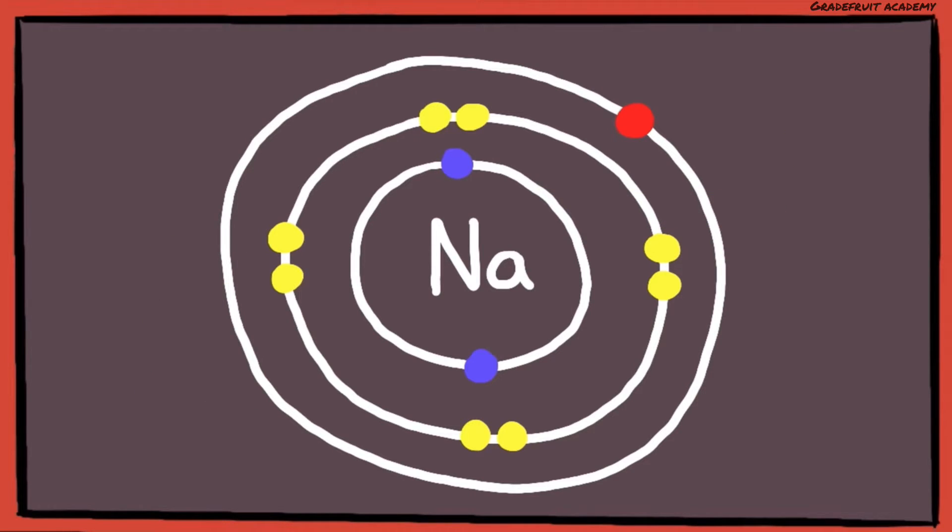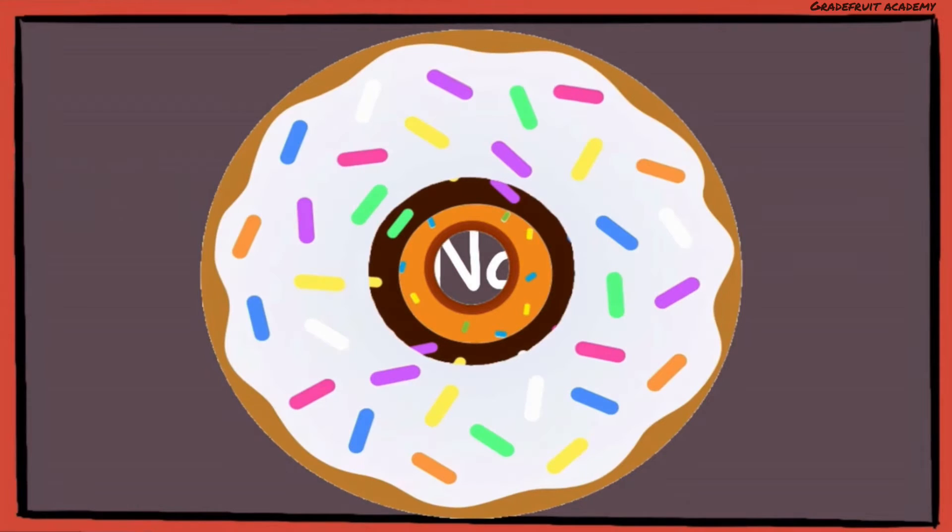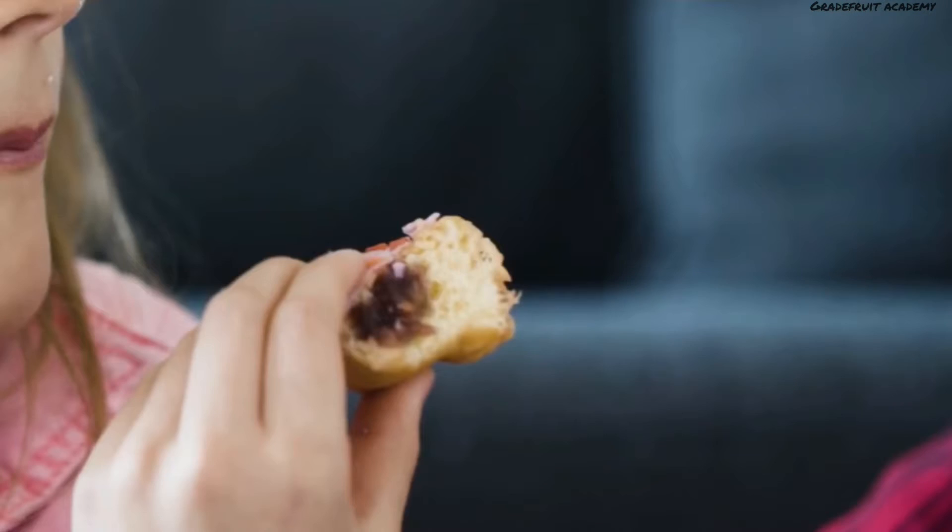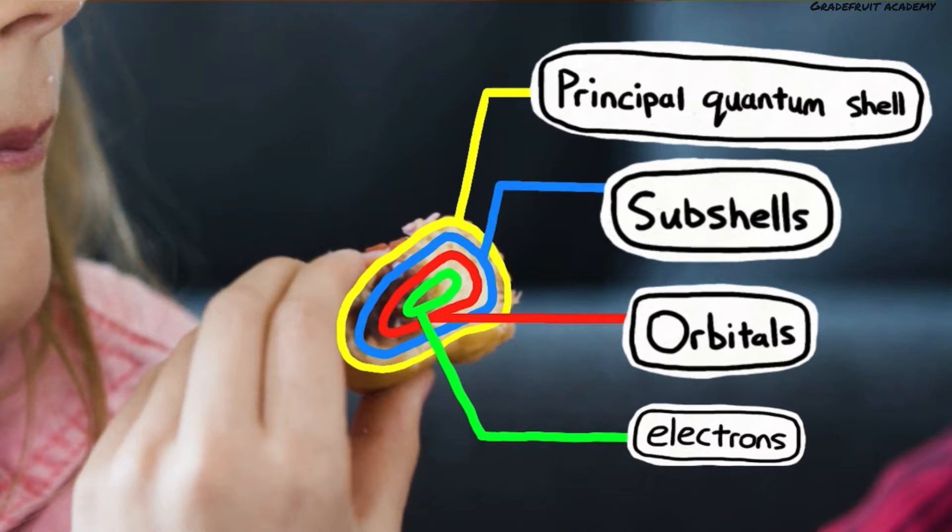To visualize this, you can imagine each principal quantum shell as donuts, from small to big. And when we look at the cross-section of a donut, we can see that the principal quantum shell houses the subshell, which houses the orbitals, which houses the electrons.